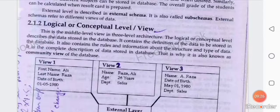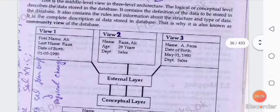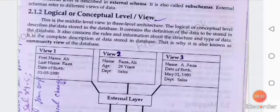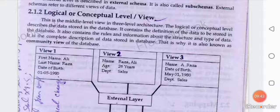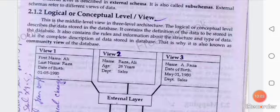Next is the logical or conceptual view of data — the middle level in the three-level architecture. The logical or conceptual level describes the data stored in the database. It contains the definition of the data to be stored, as well as rules and information about the structure and type of data. It is the complete description of data stored in the database, which is why it is known as the community view of the database.